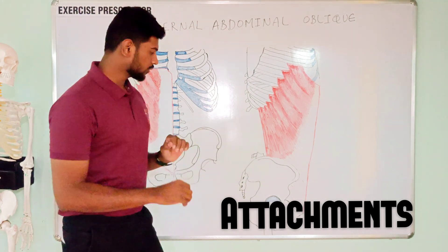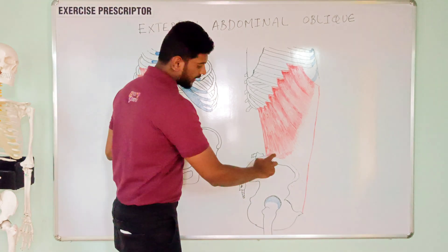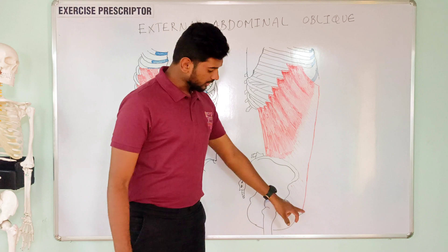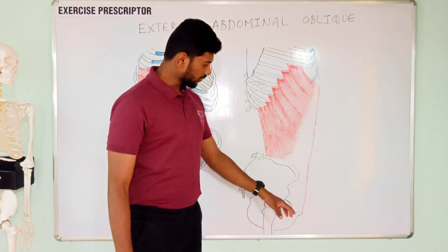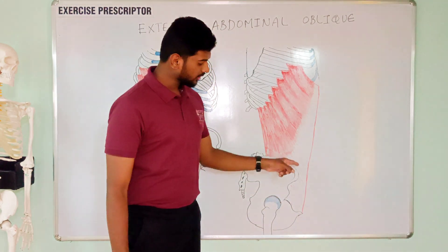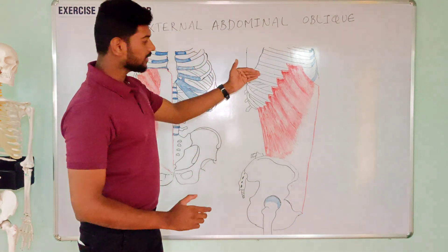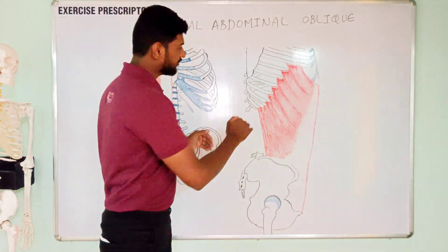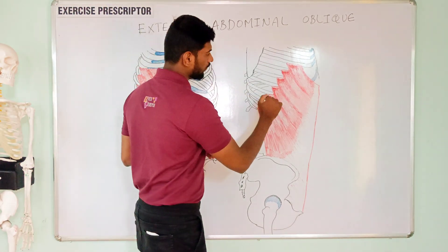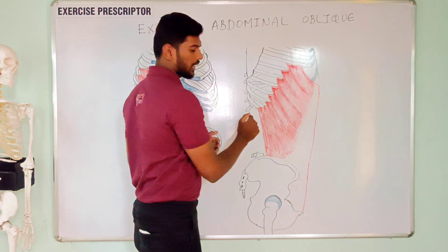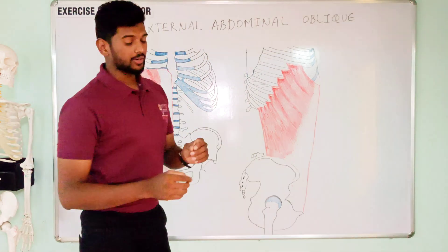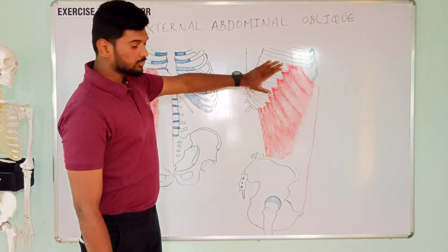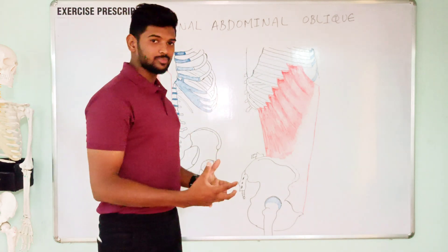Attachments of the external abdominal oblique: distally it attaches over the anterior iliac crest, pubic bone, pubic tubercle, and the abdominal aponeurosis. Proximally it attaches over the lower eighth rib and the inferior border of ribs 5 to 12. The proximal attachment of the external abdominal oblique is the more mobile attachment.